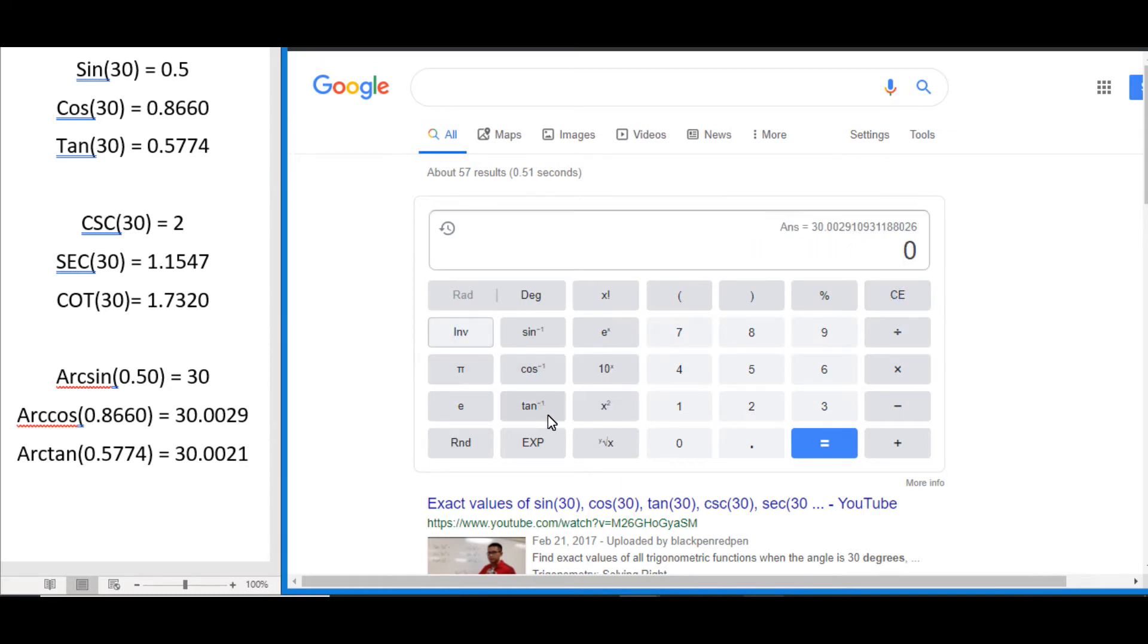And finally tan to the power minus 1 or arc tan of, remember we got 0.5774 rounded. 0.5774 equals, again we get 30.002, so this would round as well to 30 degrees if we had all our decimals in there.